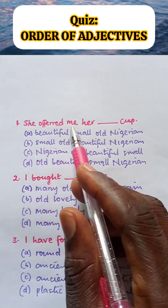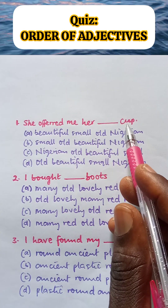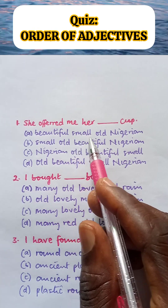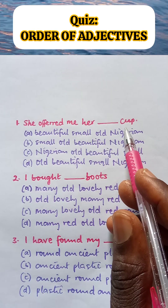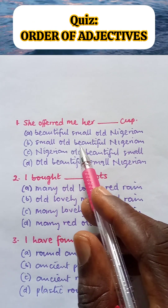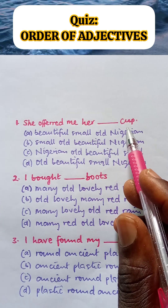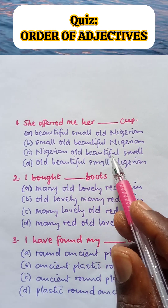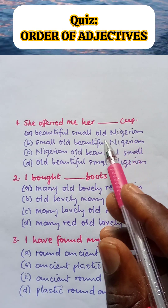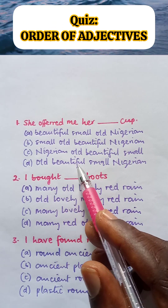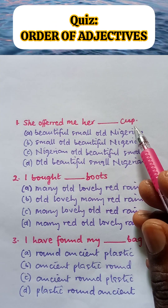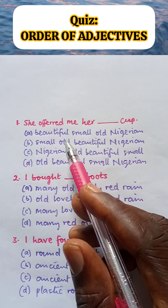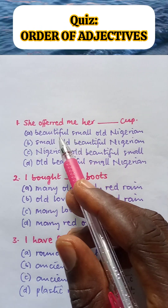Question 1. She offered me her blank cup. A: Her beautiful small old Nigerian cup. B: Her small old beautiful Nigerian cup. C: Her Nigerian old beautiful small cup. And D: Her old beautiful small Nigerian cup. This question is based on the arrangement of adjectives.